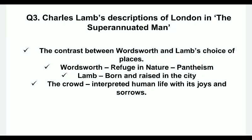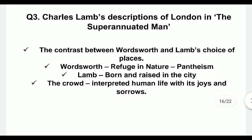The third question concerns Charles Lamb's descriptions of London in The Superannuated Man. I already discussed in the introduction that there is a stark difference between Wordsworth and Lamb. Wordsworth believed in pantheism and was preoccupied with nature as a refuge. Lamb, by contrast, was born and raised in the middle of London, and the crowd, the city, the shops — these are what interest Lamb. He interprets human life with its joys and sorrows and writes about that, in stark contrast to Wordsworth who writes mainly about nature and morality.